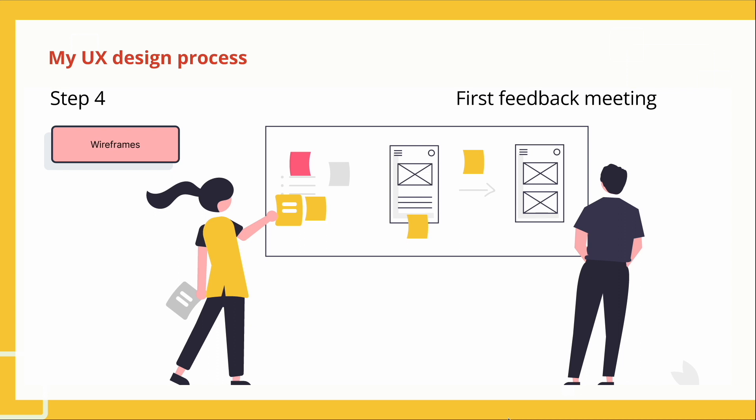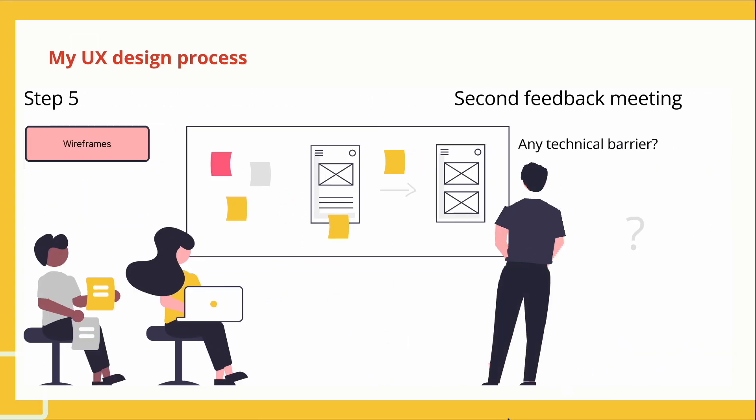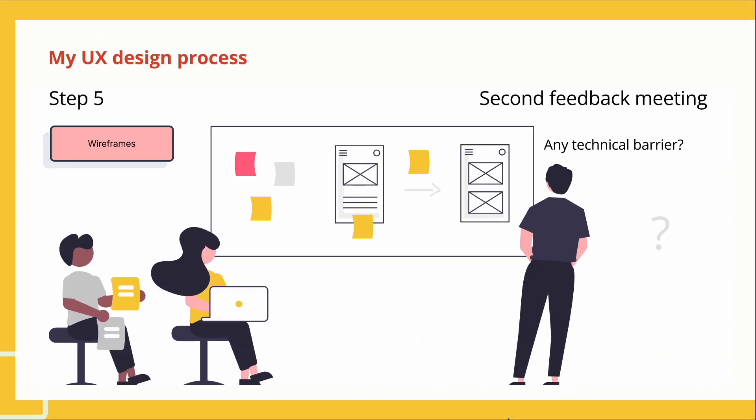After finishing my first wireframe, I set up a meeting with the team to validate what I am about to propose. In this meeting, I get feedback and confirm I haven't missed anything from the requirement. After the meeting, I update my wireframe and set up another meeting with the developers. This developers meeting helps me understand the technical feasibility of my proposed flow. After getting their feedback, I update the wireframe if necessary or share the link with developers for a final check. Once they agree with the flow, I draw the mood board.